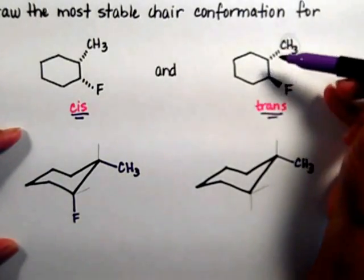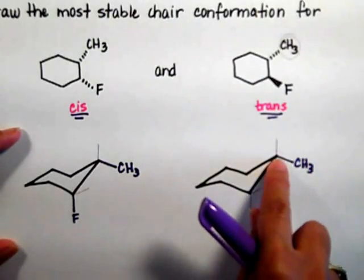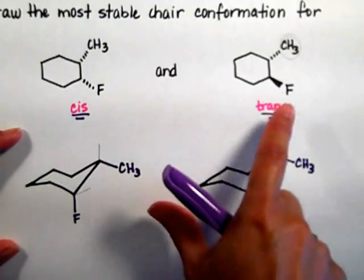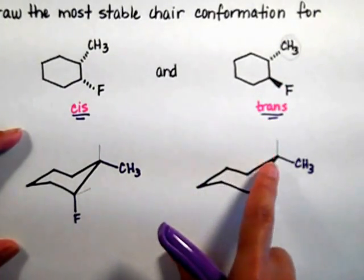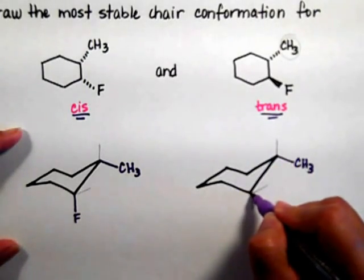Now in the trans, things are looking a little better because the methyl is equatorial down, what I need to think is down, and I need to put the fluorine trans to the methyl. So if the methyl is down, that fluorine needs to be going up.